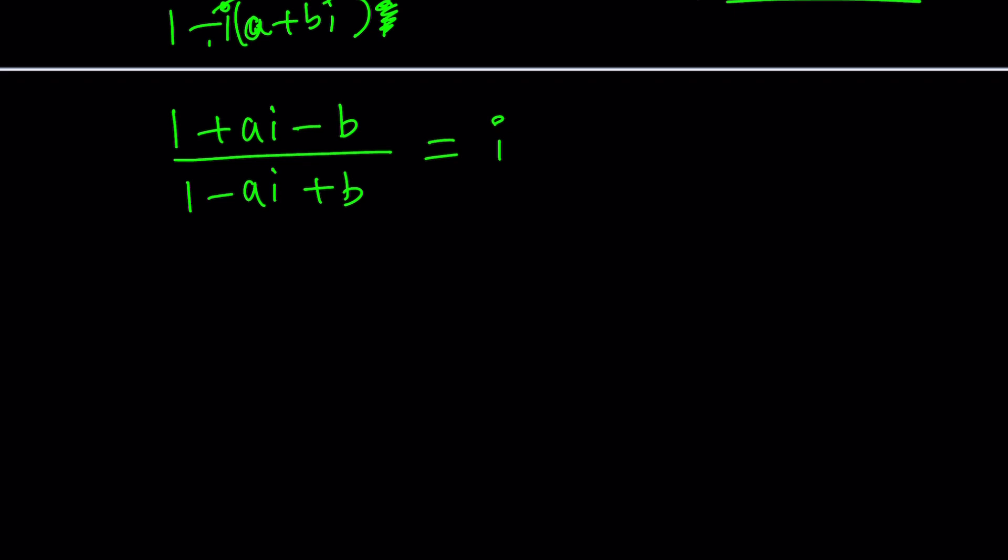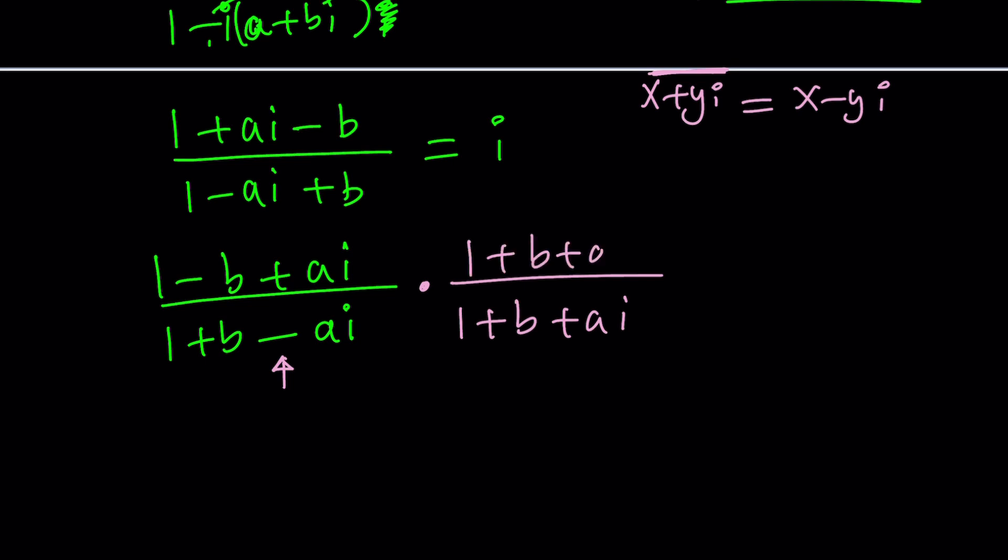Now let's put the real parts together. 1 minus b plus ai divided by 1 plus b minus ai. What do we do with these? If you are dividing complex numbers, you multiply by the conjugate. Conjugate is basically you negate the imaginary part. The real part stays the same. The conjugate of 1 plus x plus yi is x minus yi. So we're going to multiply by 1 plus b plus ai on top and bottom.